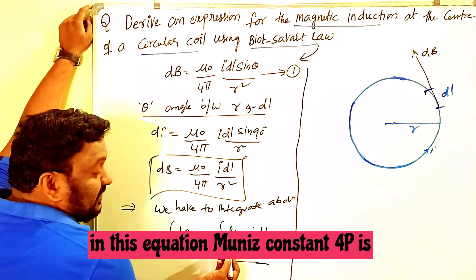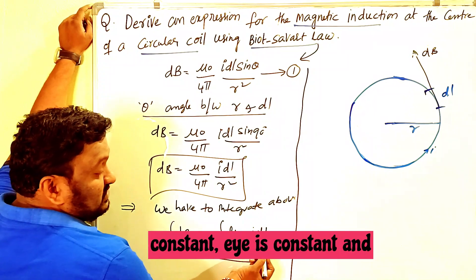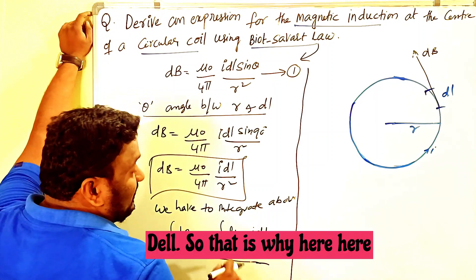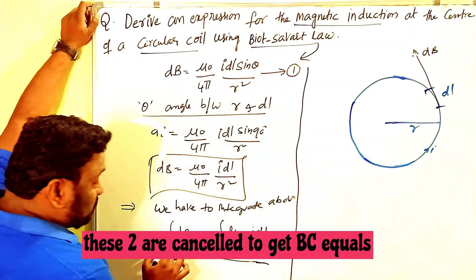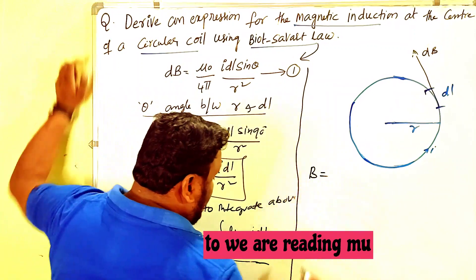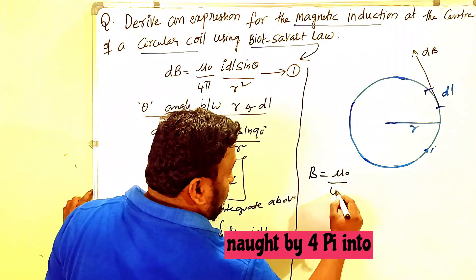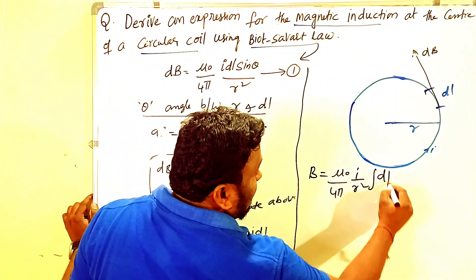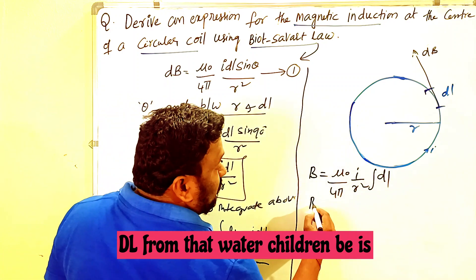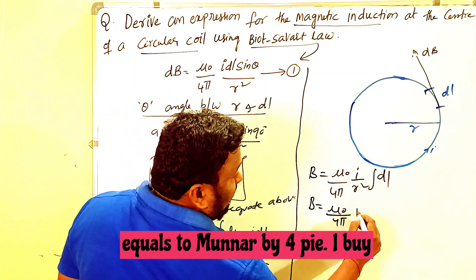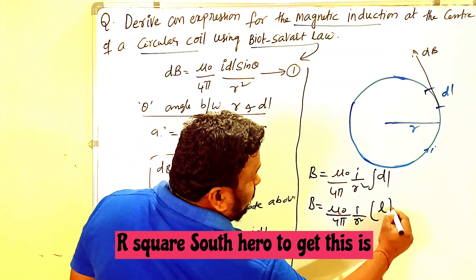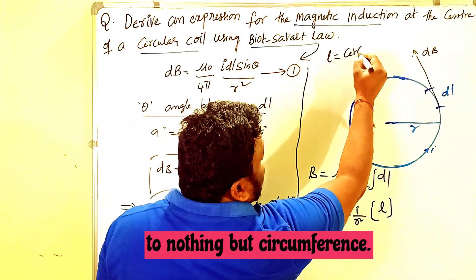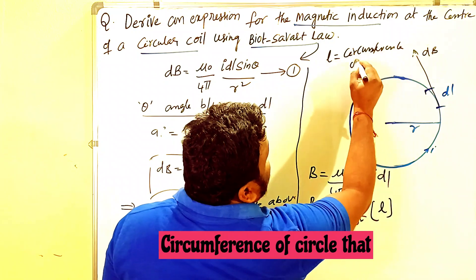Since μ₀, 4π, I, and r are all constants, the only variable is dl. Taking the constants out, we get: B = (μ₀/4π) × (I/r²) × ∫dl. Integrating dl gives the total length l, and the total length is nothing but the circumference of the circle.